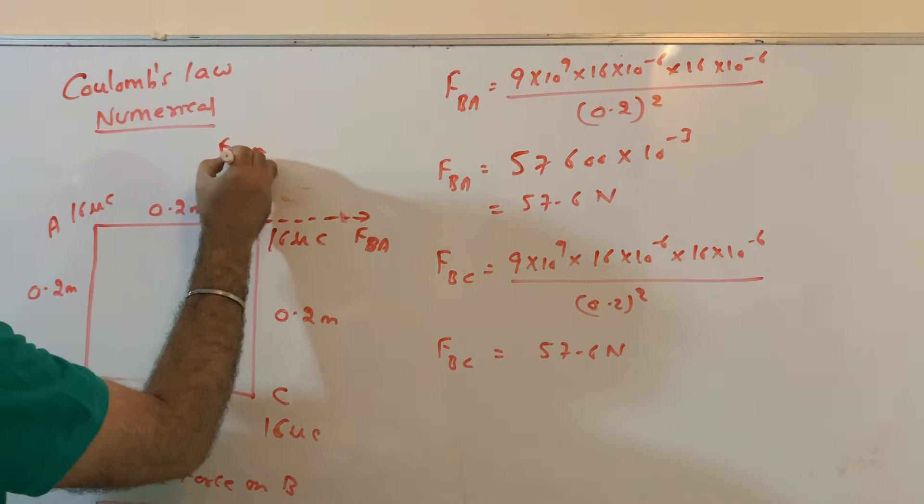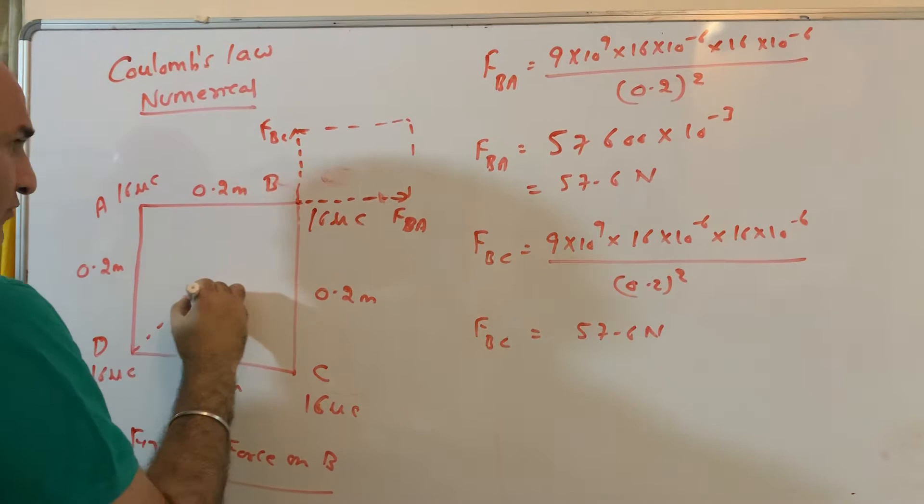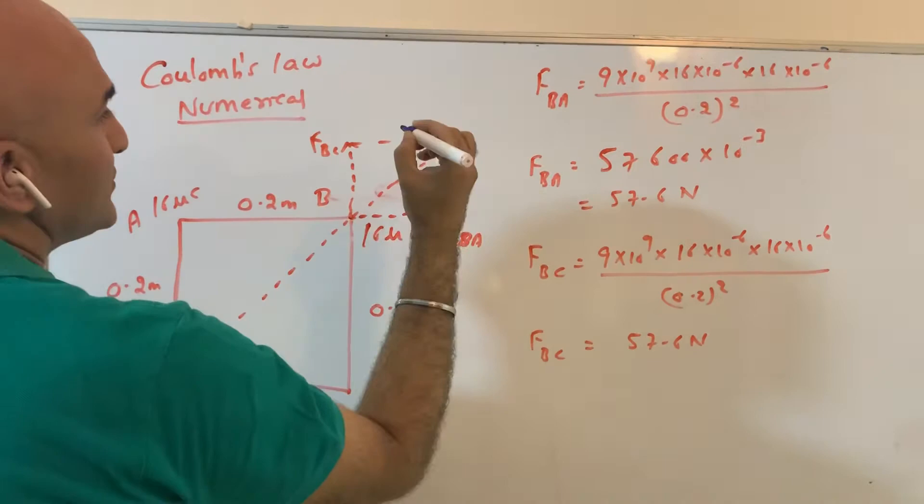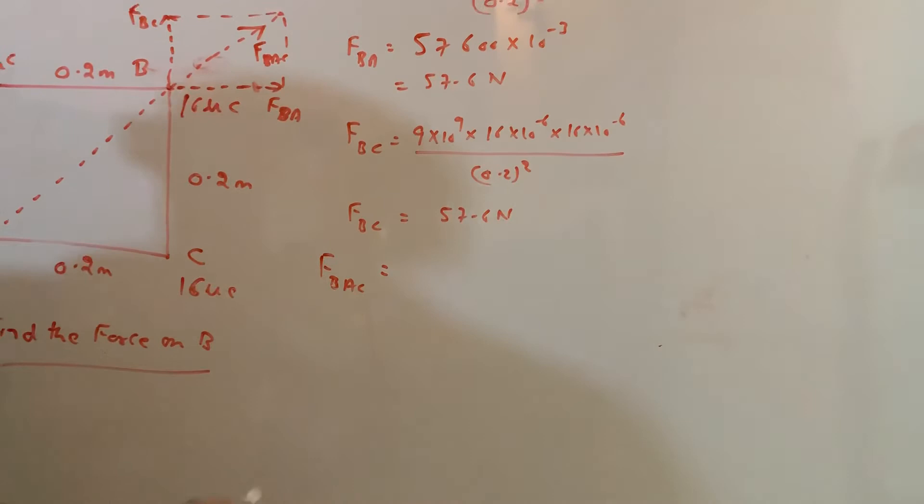So this also you will get, which will be 57.6. Now the resultant of this you will find. So this you will write force on B due to C. You will use parallelogram law vector. So when you use this parallelogram law vector, this will come here. I will write this as F of B due to A and C, both I will write. So this will come out to be equal to force on B due to A and C.